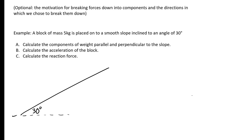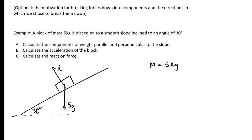We've got a block sitting on the slope with a mass of 5 kilograms. We should consider the forces that act on it: we've got the reaction force — if something sits on a surface there must be a reaction force — and then we have the weight, which in this case will be 5g.